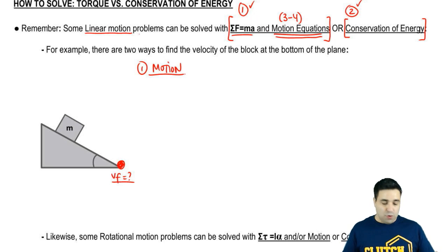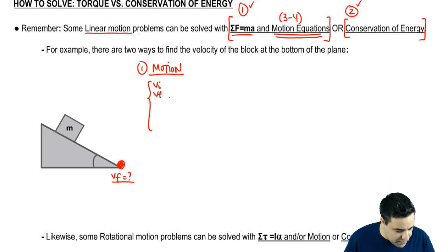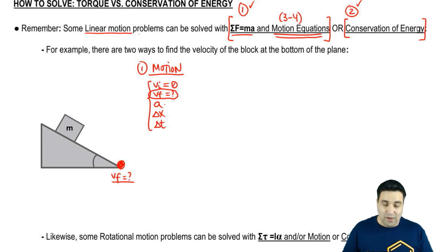And what you would do, just like any motion problem, you would list your variables: v initial, v final, a, delta x, delta t. Okay? Let's say it starts from rest, so v initial equals zero, v final is what we're looking for. Acceleration we don't have, delta x and delta t. Let's say we have the initial height and the angle. Let's say these are given.